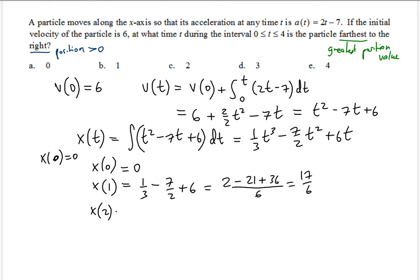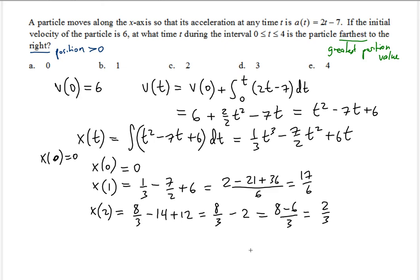Now let's try x of 2. Substituting t equals 2: 2 cubed is 8, so we get 8/3; 2 squared is 4, so minus 28/2 which is minus 14; plus 2 times 6 which is 12. That gives minus 2 plus 8/3. Using LCD of 3, that's 8 minus 6 over 3, which is 2/3. That's definitely less than 17/6.